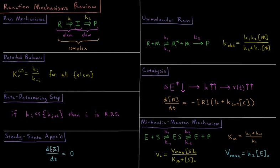So its derivative with respect to time is equal to zero allowing us to solve for the concentration of the intermediate and express our rates typically in terms of only reactants.